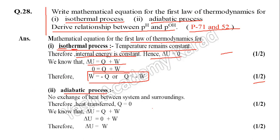Second, adiabatic process. What is meant by adiabatic process? There is no exchange of heat between system and surroundings. Therefore, heat transferred, Q, is equal to 0.